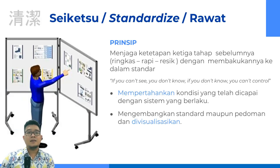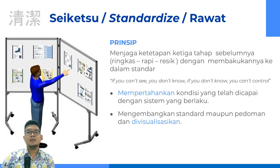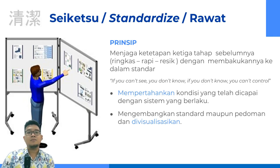S yang keempat, yaitu Seiketsu atau Standardized, dalam bahasa Indonesia kita kenal dengan istilah Rawat. Prinsipnya adalah menjaga ketetapan ketiga tahap sebelumnya, yaitu ringkas, rapi, dan resik, dan membakukannya ke dalam standar kerja. Dalam hal ini, rawat kita mempertahankan kondisi yang sudah dicapai dengan sistem yang berlaku. Mengembangkan standar ini menggunakan pedoman yang dapat kita visualisasikan.